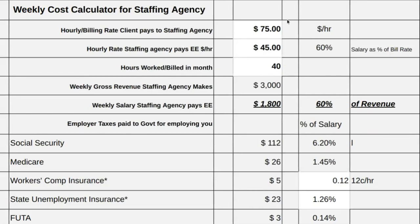We have $75 as the bill rate and $45 as the hourly rate for someone working 40 hours a week. Essentially, 60% of $75 is how we got the $45. Once you put this in, the other fields drop in — and then vice versa, all the other calculations populate as well.